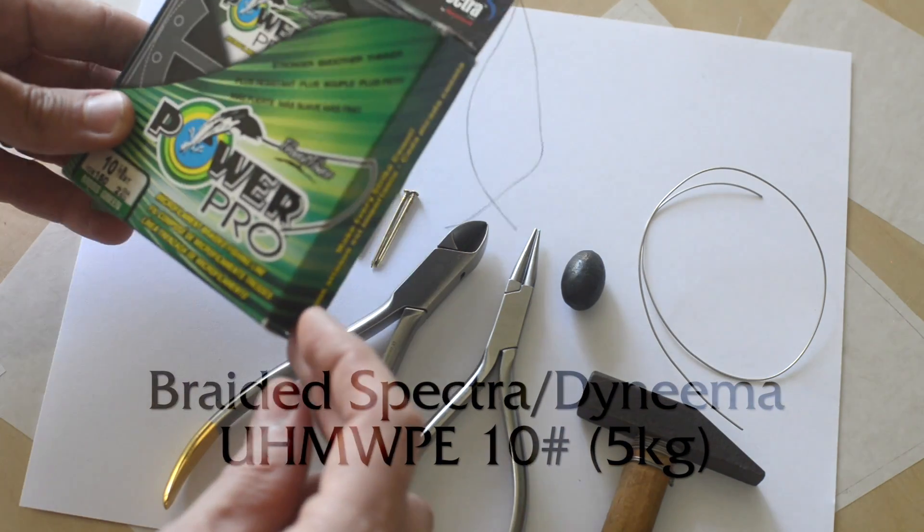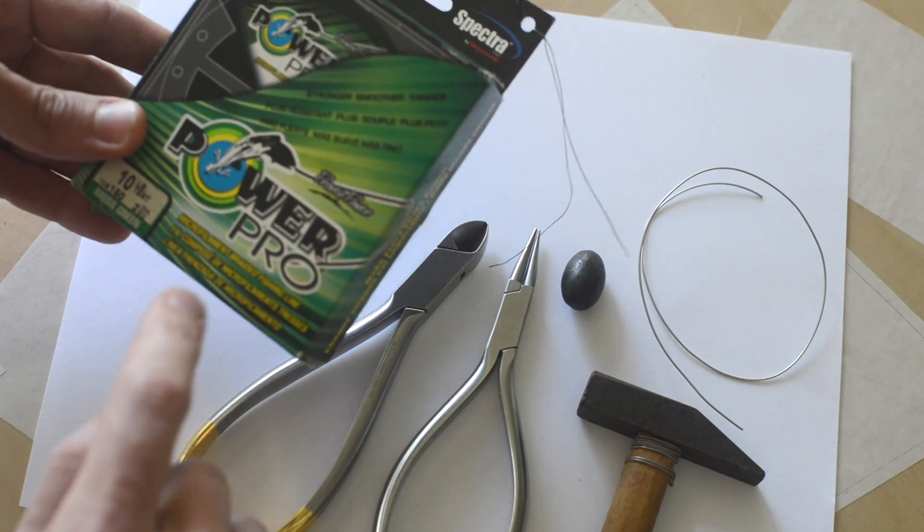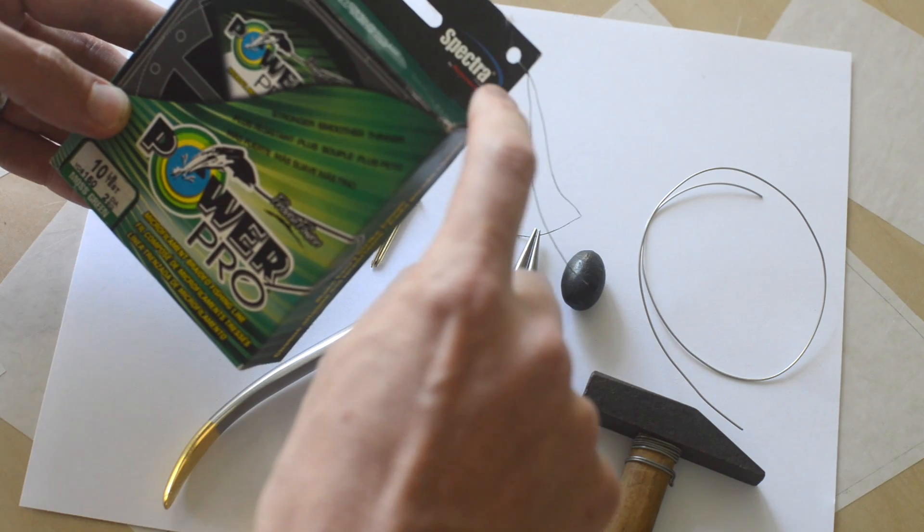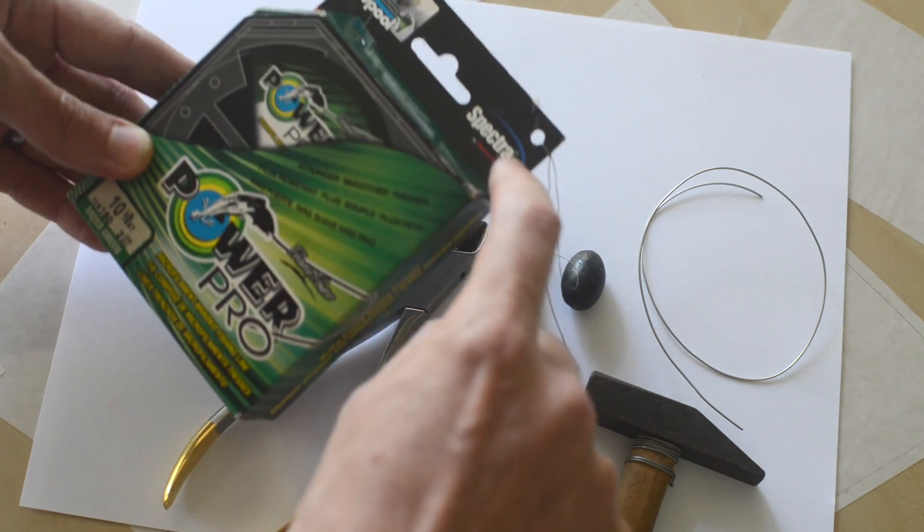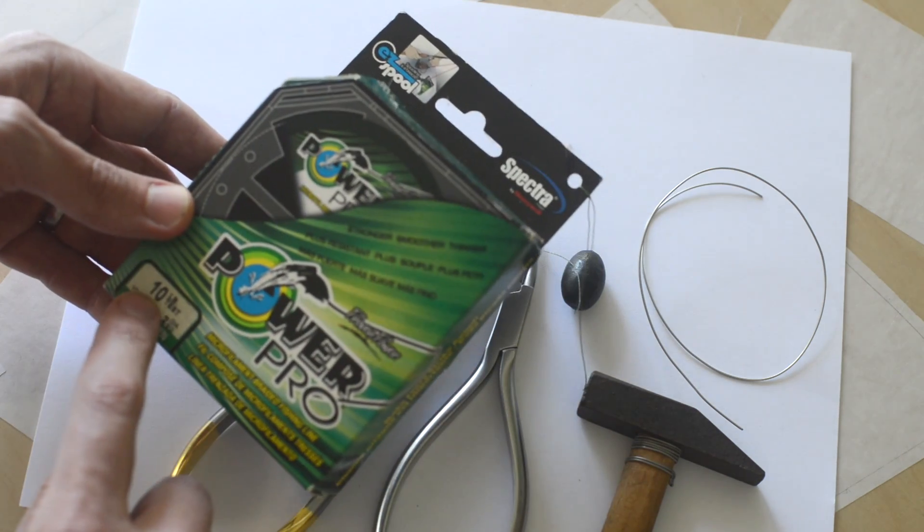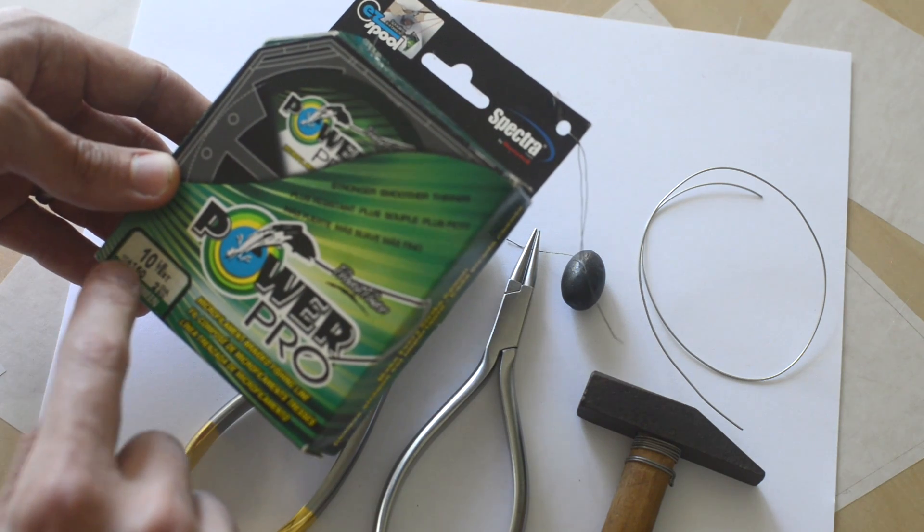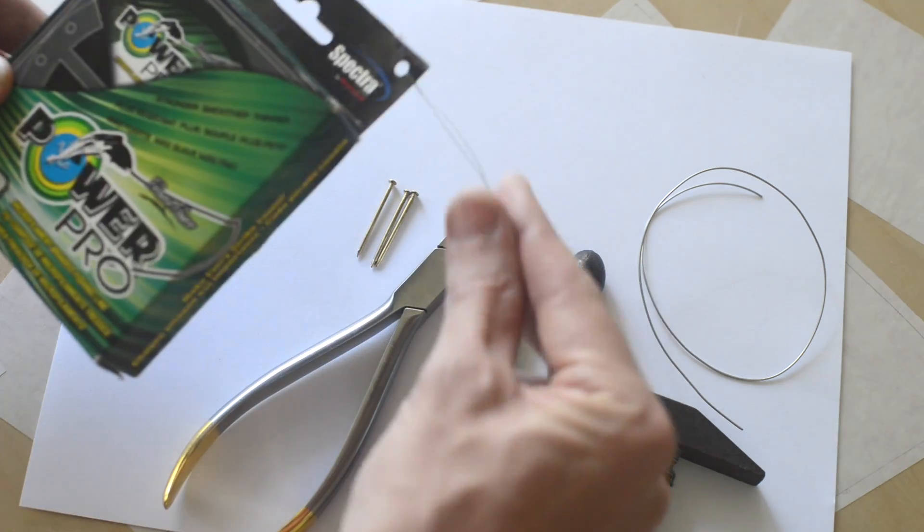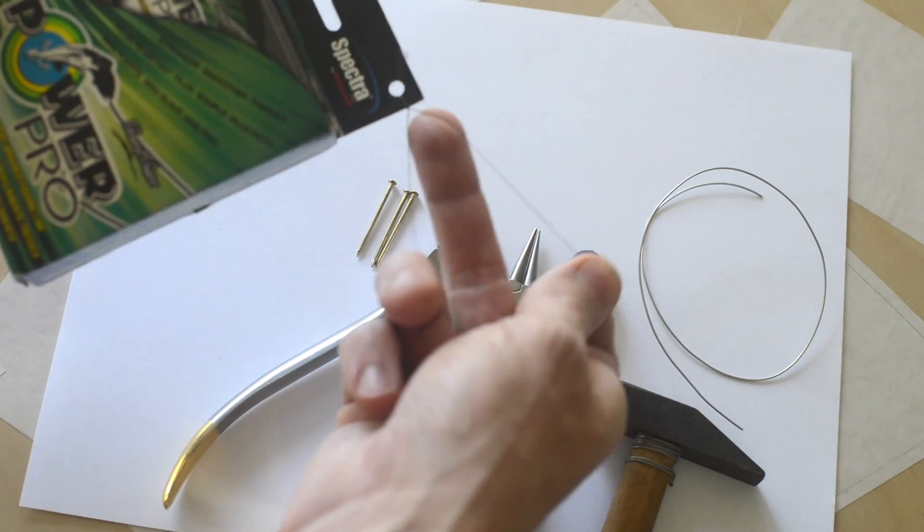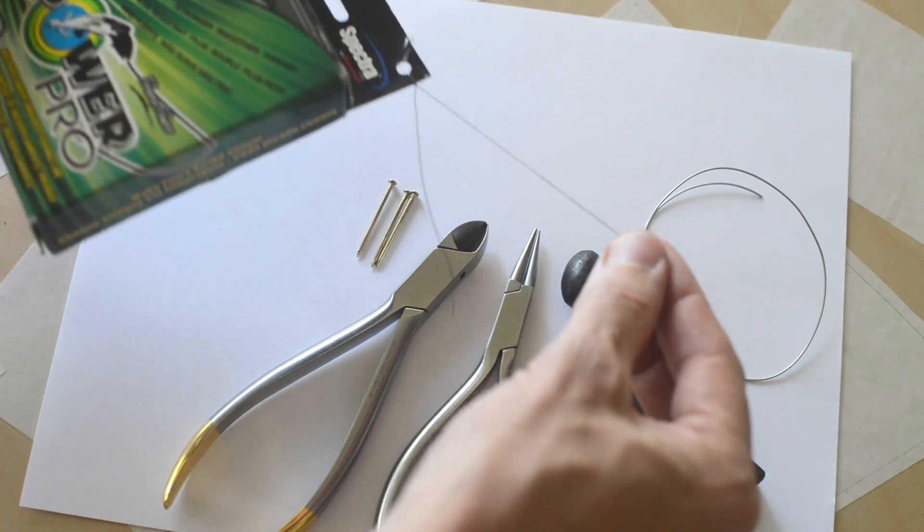Maybe the most important part of the project is this braided spectra line. The words you're looking for when you buy it are braided and spectra, or if you're in Europe that's probably going to be Dyneema, which is a brand name for ultra high molecular weight polyethylene. This is 10 pound test. It's available in a number of colors, commonly available in fishing shops.